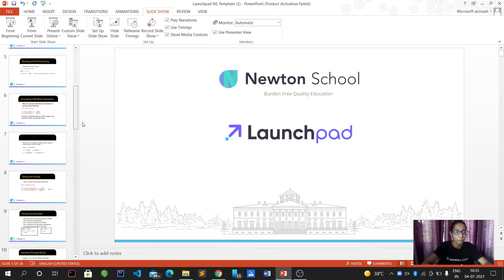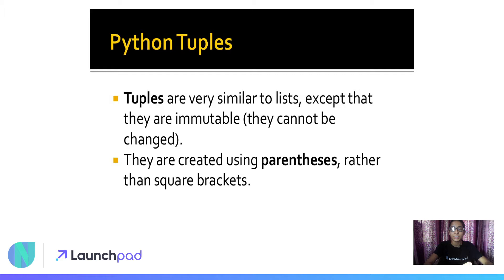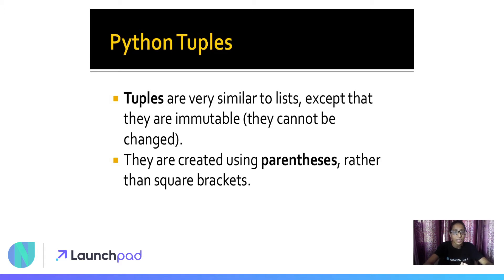So let's move to tuples in Python. What are tuples? Tuples are almost similar to lists, except for the immutable structure — that means they cannot be changed. Tuples are commonly used similar to strings or lists, but they use parentheses, i.e., circular brackets, not square brackets.